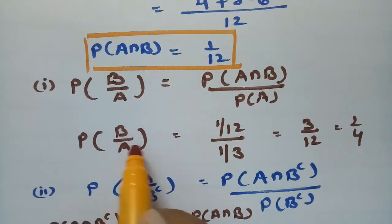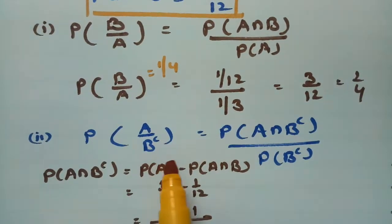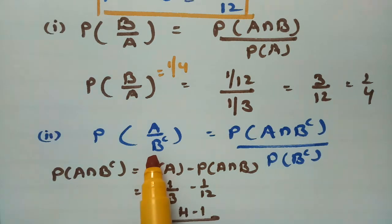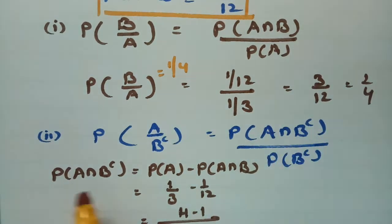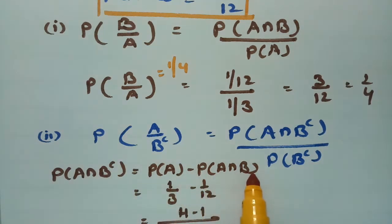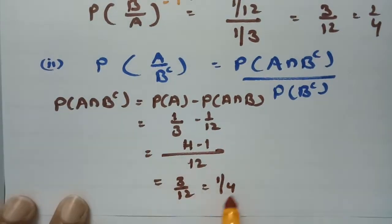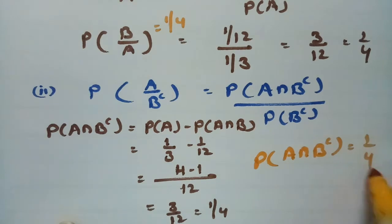Next, we find the probability of A given B complement. From conditional probability, P(A|B') = P(A∩B') / P(B'). First, we need P(A∩B'). The formula is P(A∩B') = P(A) − P(A∩B) = 1/3 − 1/12. After simplifying, P(A∩B') = 1/4.